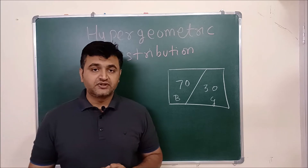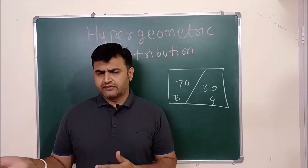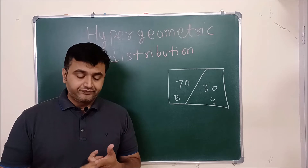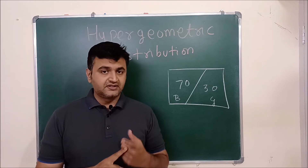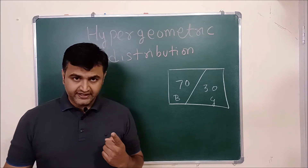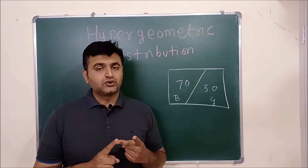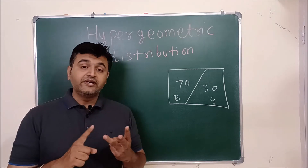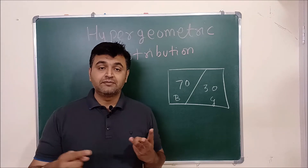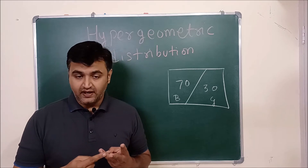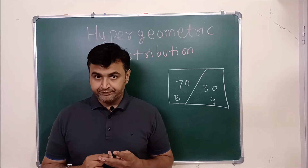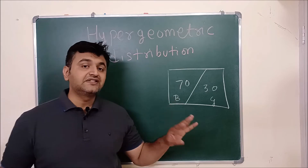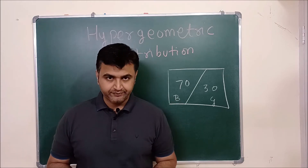What are those four assumptions? You can look at my earlier lecture if you wish. They say: your experiment consists of repeated trials; each trial has two outcomes, success or failure; the probability of success remains the same in each trial; and the trials are independent. Under these four conditions, you have a nice formula for binomial distribution.